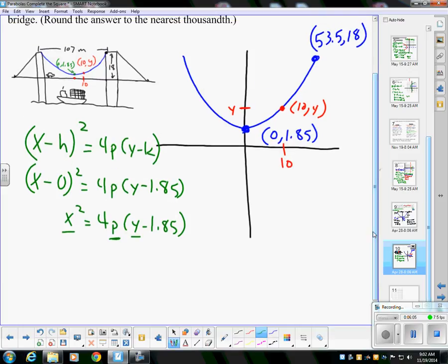It's that (53.5, 18). So I know 53.5² = 4p(18 - 1.85). Now those numbers aren't pretty, but they're going to work because all I have to do is take 1.85 from 18.